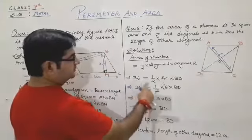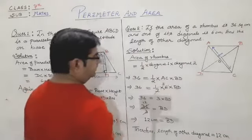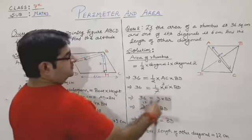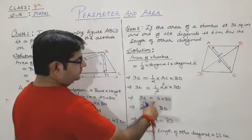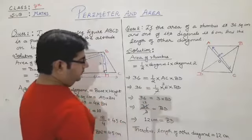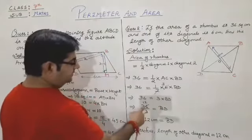36 equals one-half into AC into BD. We are given AC as 6. Now 6 is divisible by 2, which gives 3, so we get 36 equals 3 into BD.